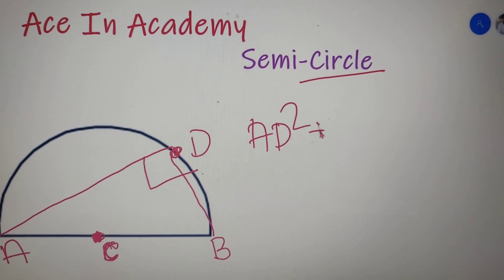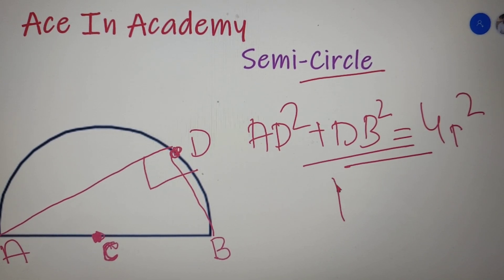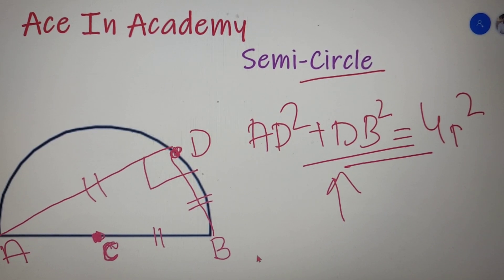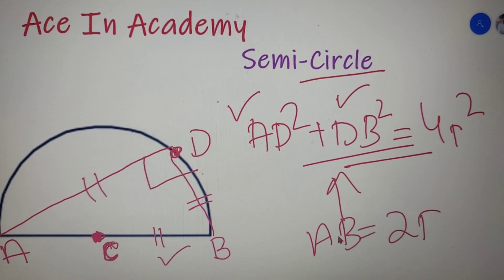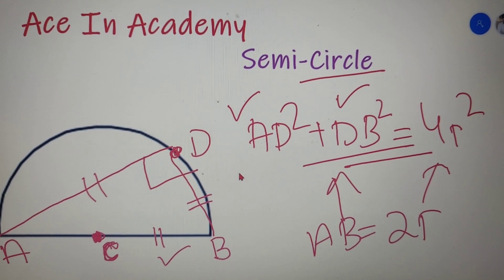Since the triangle formed is a right angle triangle, we can say that AD² + DB² = 4R². This comes from applying the Pythagorean theorem. According to Pythagoras theorem, for any right angle triangle, the sum of the squares of the perpendicular and base equals the square of the hypotenuse. Here AD is the perpendicular, DB is the base, and AB is the hypotenuse. Since AB = 2R, AB² = 4R², giving us AD² + DB² = 4R². A separate video on Pythagoras theorem is linked in the description.